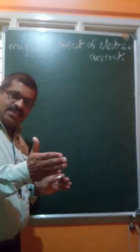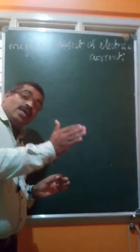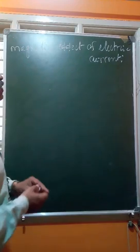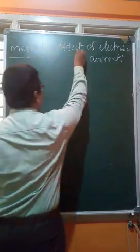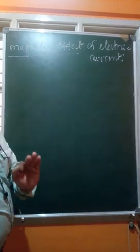In the previous class, we studied some effects of electric current — specifically the heating effect, where electricity converts into heat energy. Now we are going to the second chapter: the magnetic effect of electric current, which means electric energy can be converted into magnetic energy.